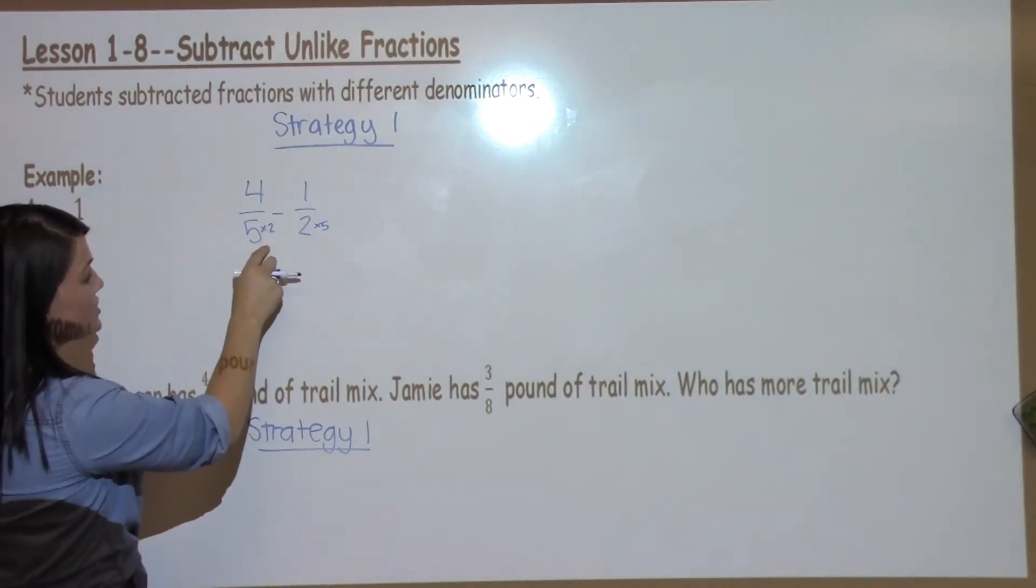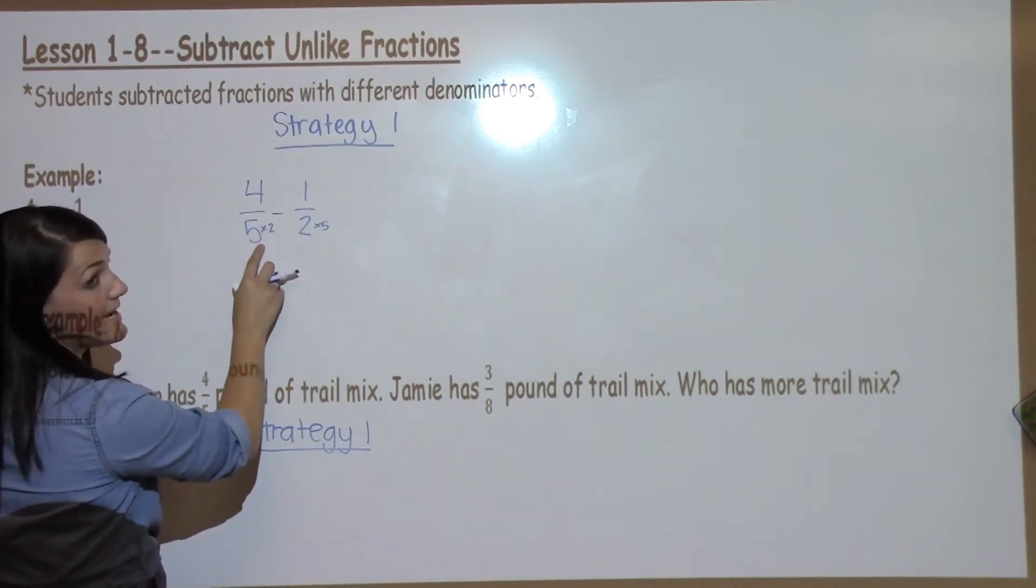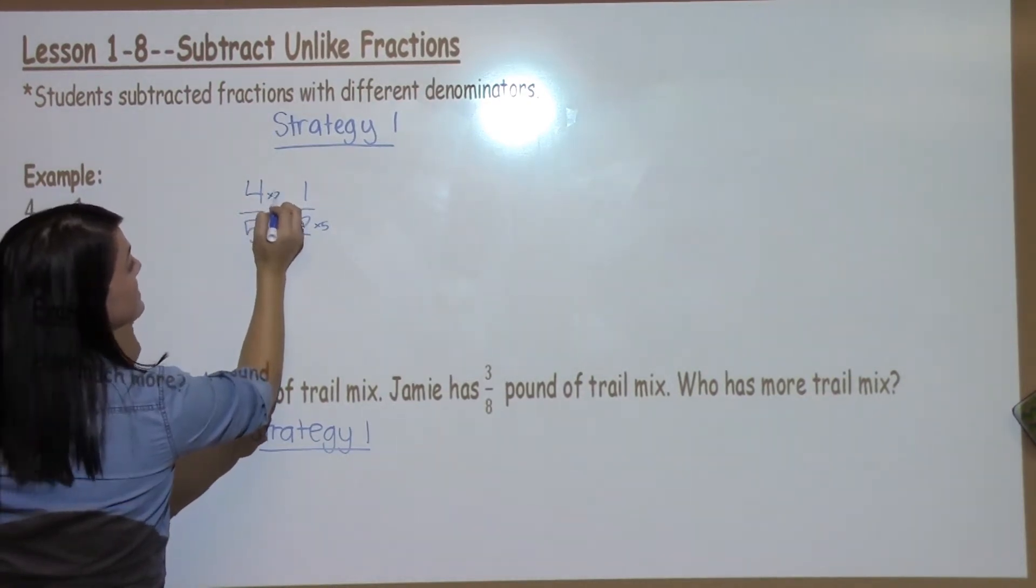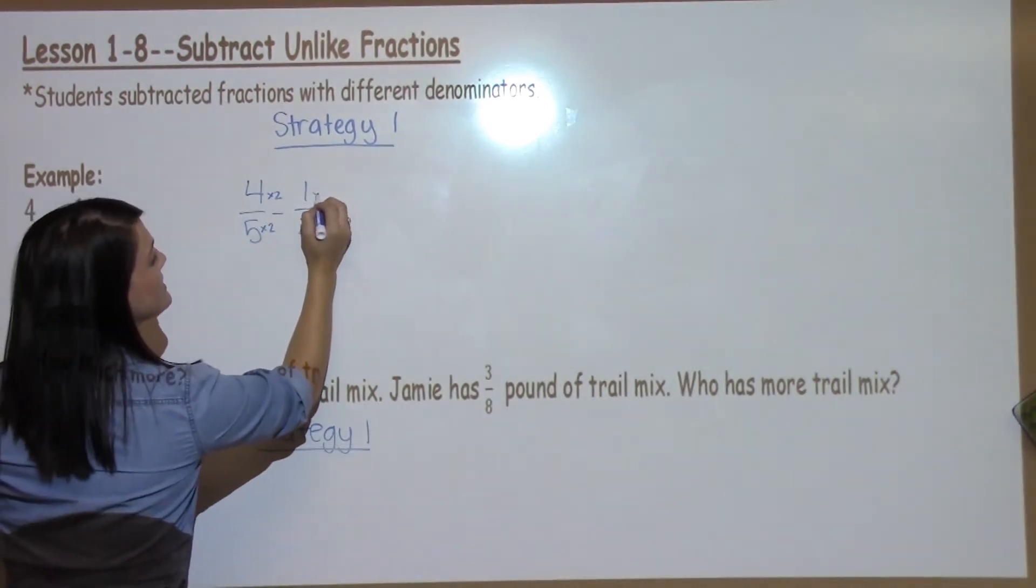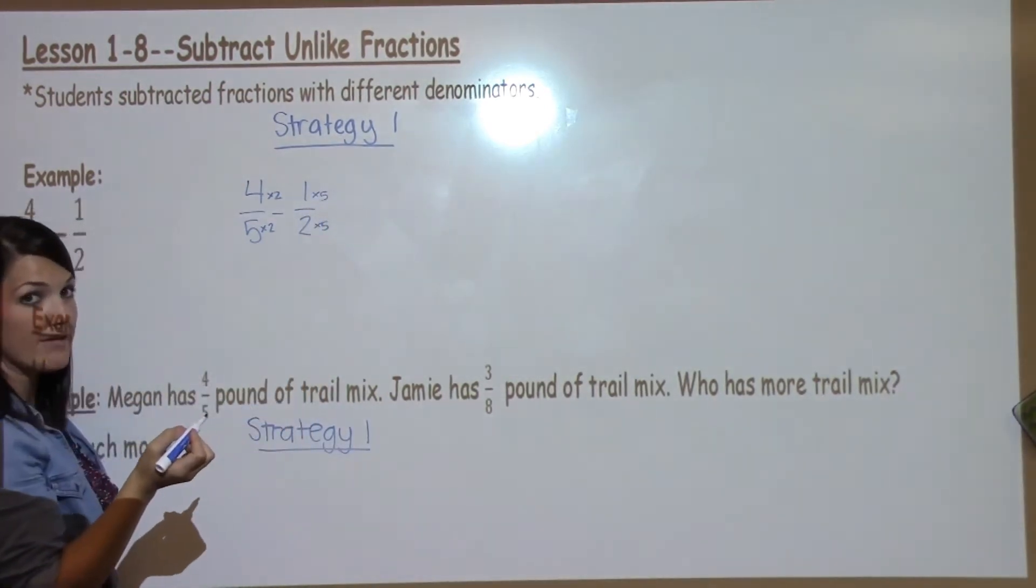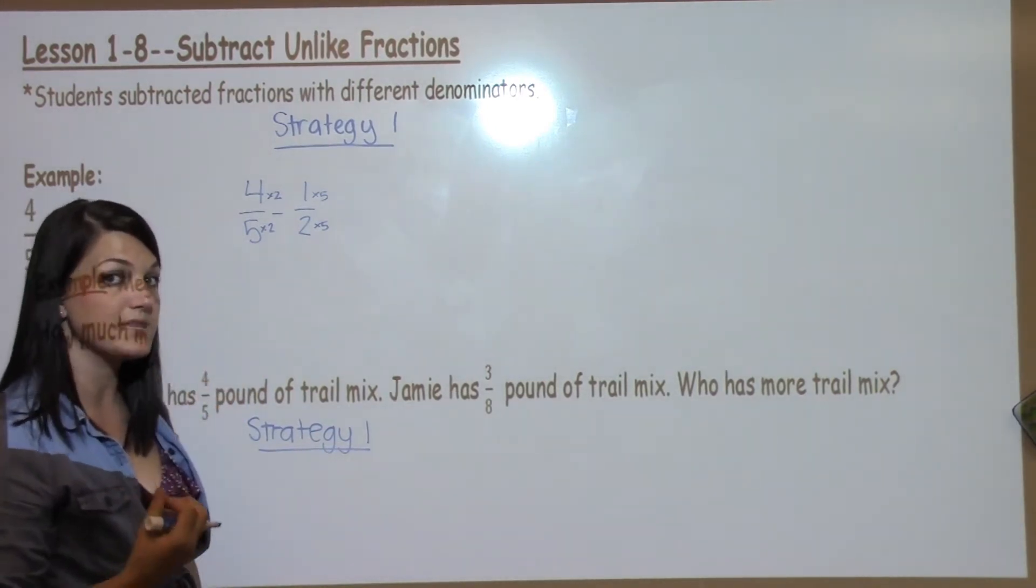With fractions, anything I do to the bottom I must do to the top. So if I took the bottom times 2 I must take the top times 2. In this fraction I took the bottom times 5 so I must take the top times 5. This is going to create two new looking fractions but they will be equivalent.